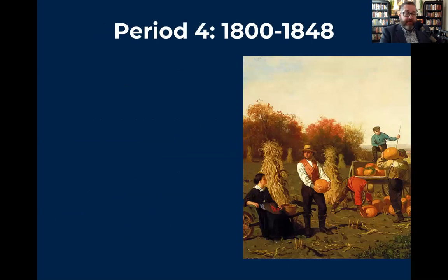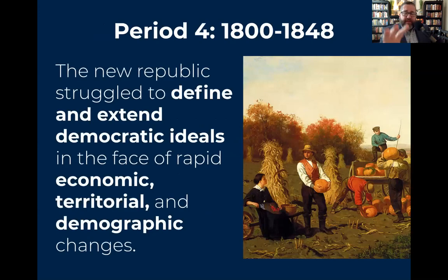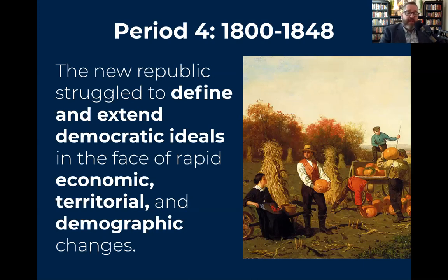Let's take a look at Period 4. We're going to divide it into two parts. This sets the stage for all of Period 4, from 1800 to 1848. We're going to define what democratic ideals mean in this new society — taking power out of the industrial northeast and putting power into the hands of inner Appalachia, places like Kentucky and Tennessee, where those individuals will have a larger voice in the American experiment. This happens in the face of rapid economic, territorial, and demographic changes.